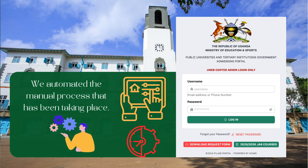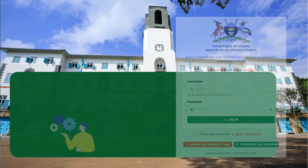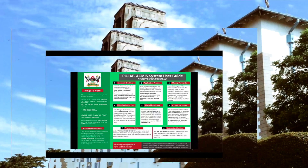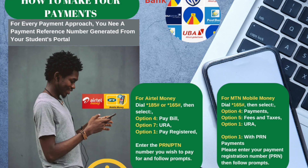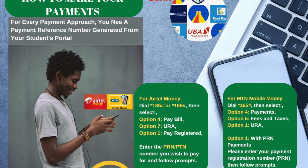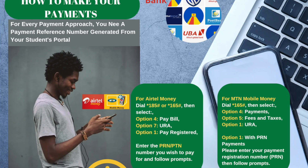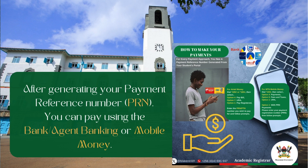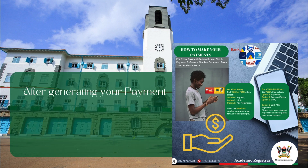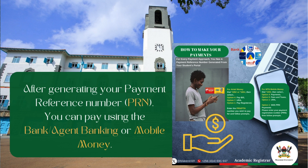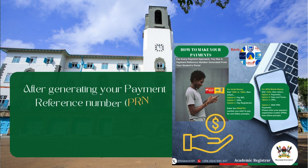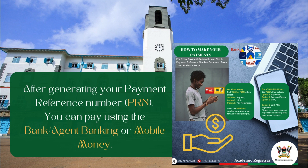This system has replaced the manual process that has been taking place. Once you have generated a payment reference number, you can pay using two modes. You can pay using the bank — either go to the agent bank or the banks themselves — and pay using the payment reference number. This money will be received through URA.